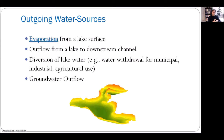There are four types of outgoing water. The first is evaporation from the lake surface. The second is outflow from the lake to a downstream channel — lakes are often connected to channels upstream and downstream, and we need to know how much water leaves through the downstream channel. The third is water diversion, where municipalities, industries, or agricultural users withdraw water from the lake. The fourth is groundwater outflow — just like groundwater inflow, a lake can also lose water through groundwater outflow.